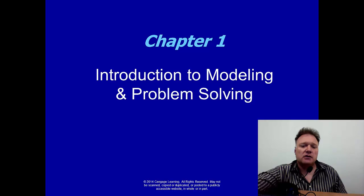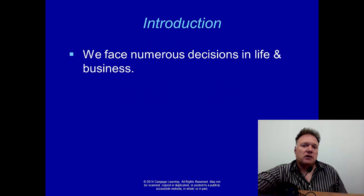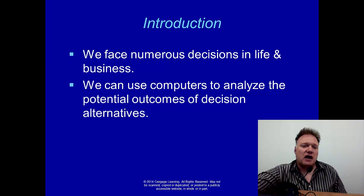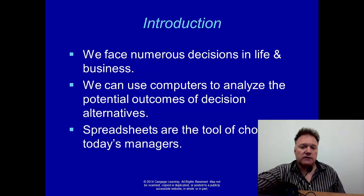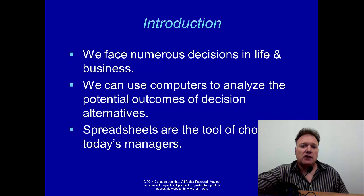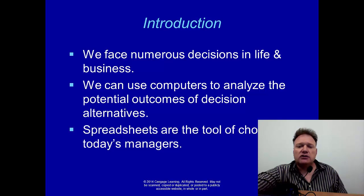This is the introduction chapter. We're always making decisions in life and in business, and we can use a computer to evaluate our different outcomes and choose a better decision. The computer can be used to help us out — not on all decisions, but on structured ones for sure, and semi-structured ones too. We're looking at modeling, using the computer to help us make better decisions. Spreadsheets are the preferred choice for doing this.